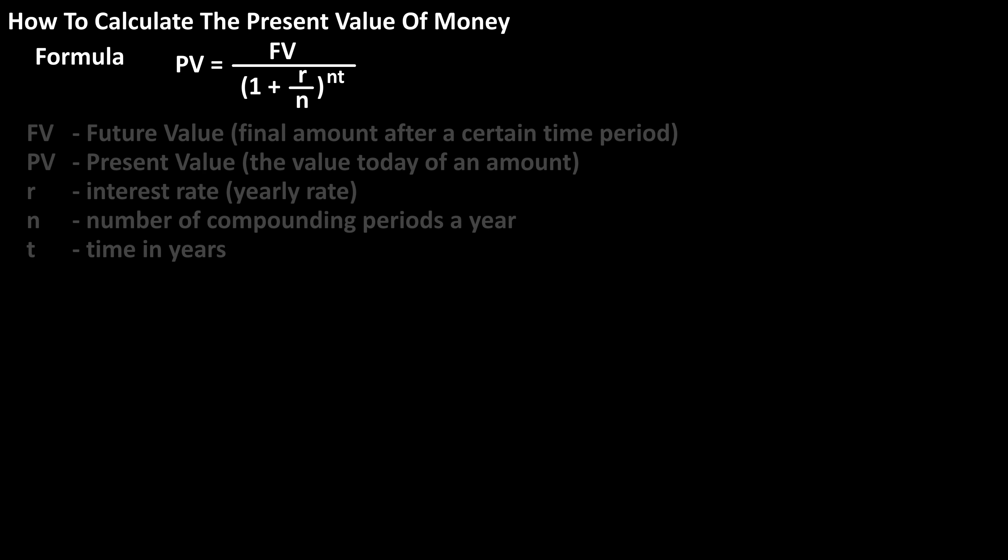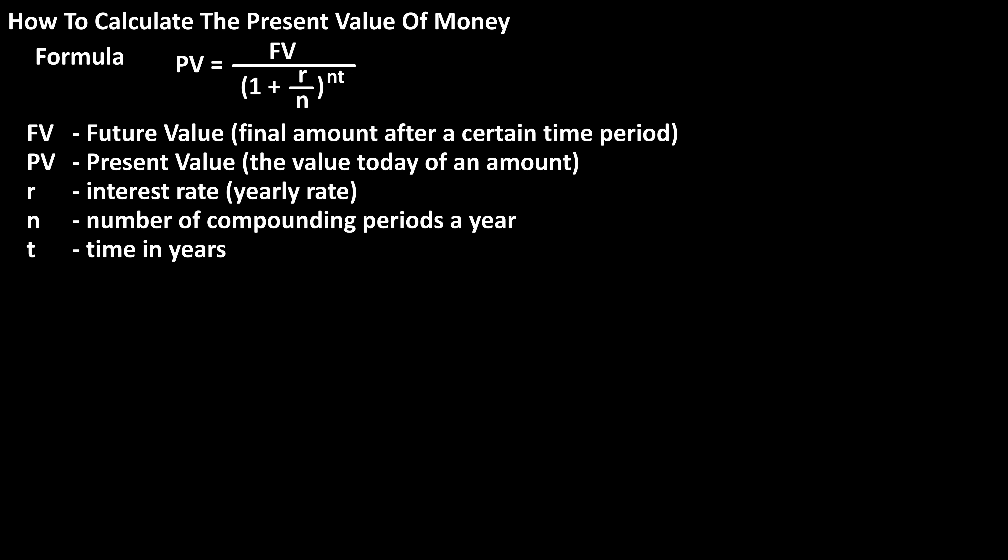In this formula, future value represents the value of an amount in the future, r represents the yearly interest rate, n represents the number of compounding periods per year, and t represents the time in years.